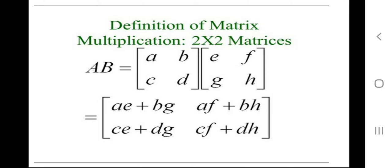So we multiply a with e and then add b multiplied by g. For the second entry, we take the first row with the second column: a multiplied by f, then add b multiplied by h. Similarly, we take the second row of the first matrix and multiply it one by one with the columns of the second matrix.